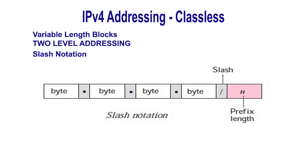In classless addressing, we need to include the prefix length with each address if we need to find the block of the address. The prefix length n is added to the address separated by a slash. This notation is informally referred to as slash notation, and formally referred to as classless inter-domain routing or CIDR notation.